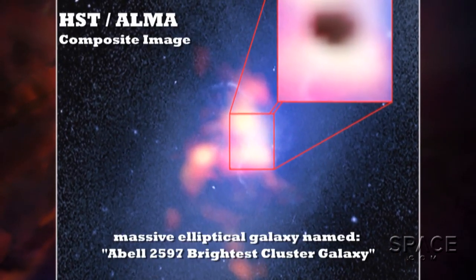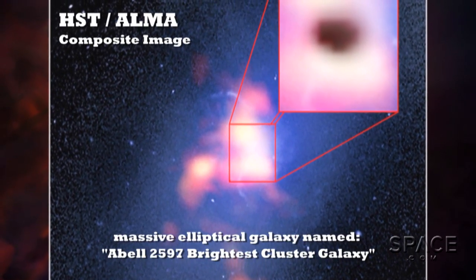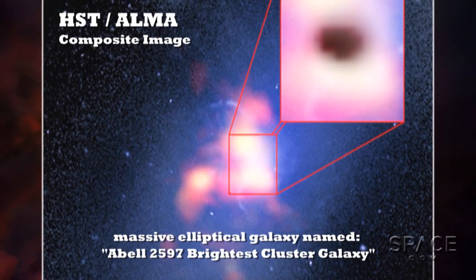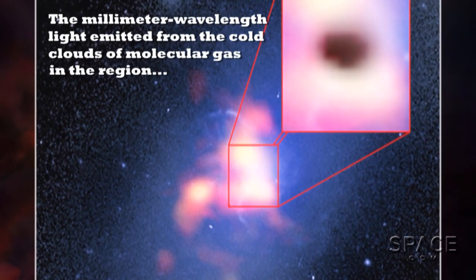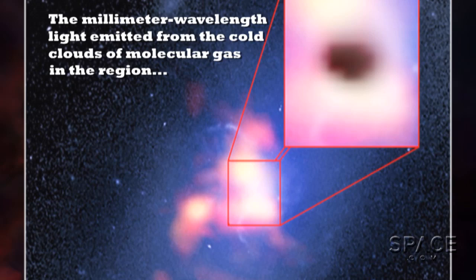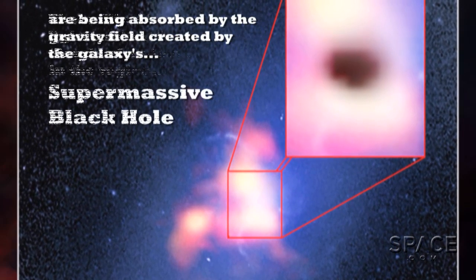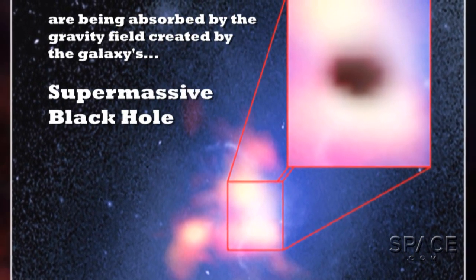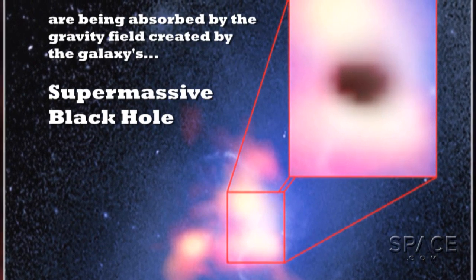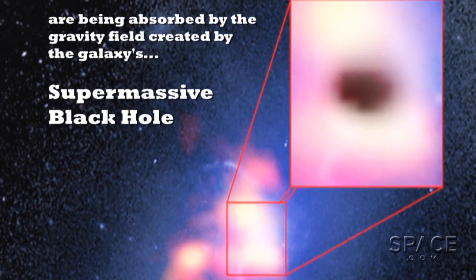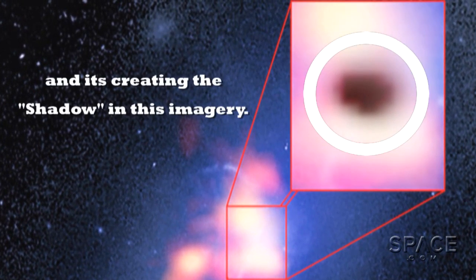The image seen here combines a Hubble Space Telescope image with the ALMA data. The millimeter wavelength light emitted from the cold clouds of molecular gas in the region are being absorbed by the gravity field created by the galaxy's supermassive black hole, and it's creating the shadow in this imagery.